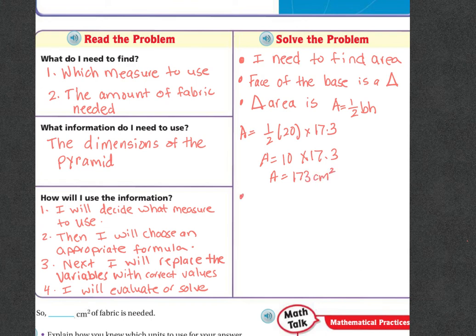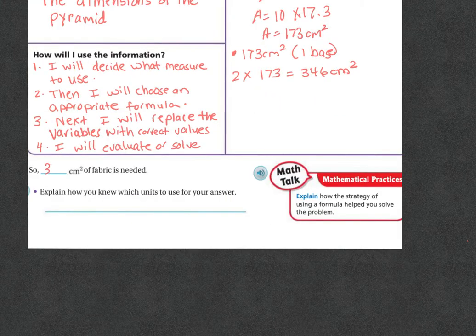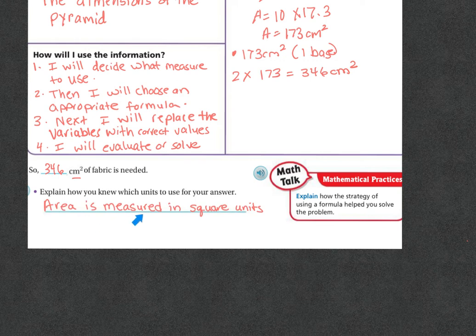Next, I'm going to take the 173 centimeters, which is for one of our bases. But remember that the problem said that the area has a pyramid face with the base covering, and the base and the face have the same dimension. So the area of two triangles, two triangles times 173 is going to be 346 centimeters squared. So you're going to need 346 centimeters squared of fabric needed. Explain how you knew which units to use for your answer. Area is measured in square units, and since centimeters was the units here, we squared it.